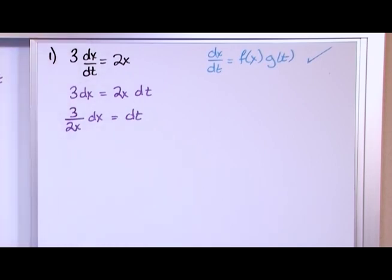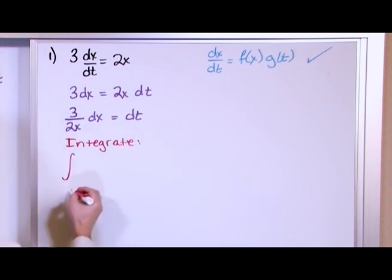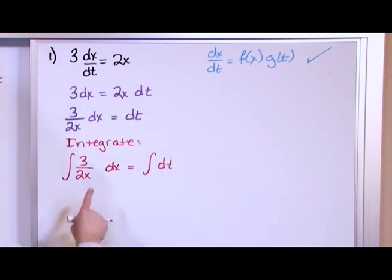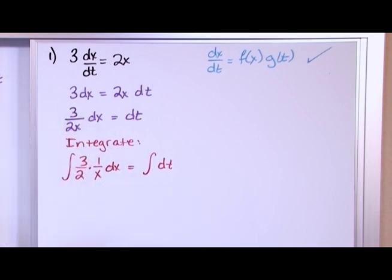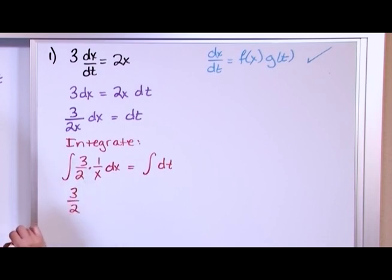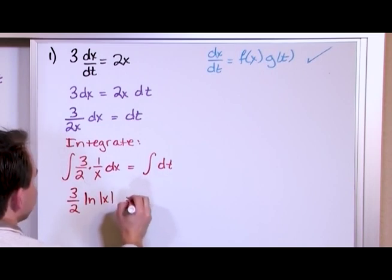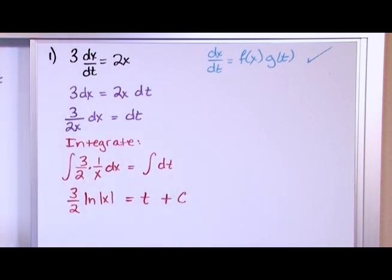The next step is to integrate. We have the integral of 3/(2x) dx equals the integral of dt. I'll rewrite 3/(2x) as 3/2 times 1/x. The constant 3/2 comes out of the integral, and the integral of 1/x is the natural log of the absolute value of x. On the right, the integral of dt is simply t. Then we place our constant of integration on one side.